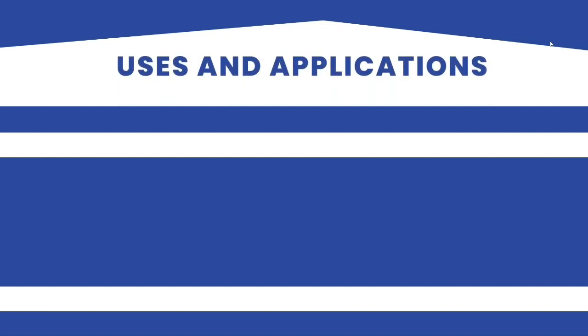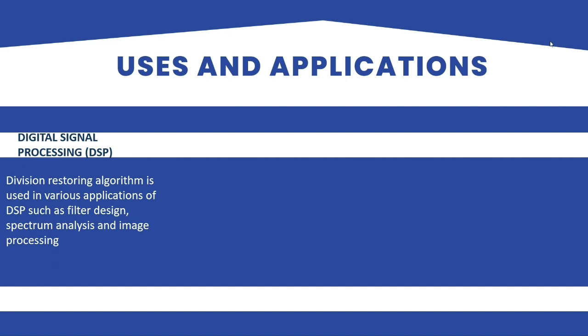Now, let's come to the uses and applications of division restoring algorithm. The first use is digital signal processing. Division restoring algorithm is used in various applications of DSP such as filter design, spectrum analysis and image processing. The design of digital filters often requires division operations to be performed. Spectrum analysis is used in digital signal processing to analyze the frequency content of a signal. In image processing, it is used for image compression and reconstruction where division operations are needed to calculate the pixel values.